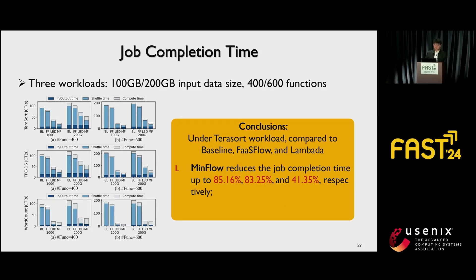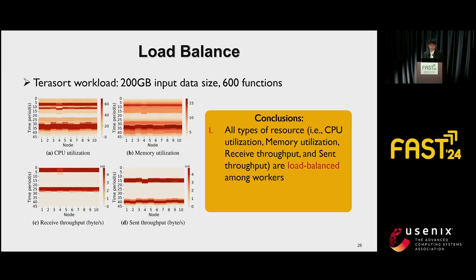The figure shows the job completion time of three workloads. Under the Terasort workload, compared to baseline, FastFlow, and Lambda, Mean Flow reduces job completion time up to 85.16%, 83.25%, and 41% respectively. The figure also shows the load distribution of various resources in the cluster for the Terasort workload. In conclusion, all types of resources — including CPU utilization, memory utilization, receive throughput, and send throughput — are load balanced among workers.